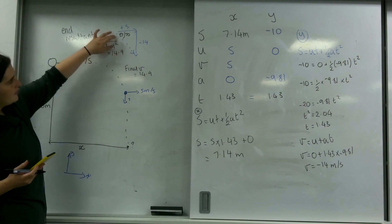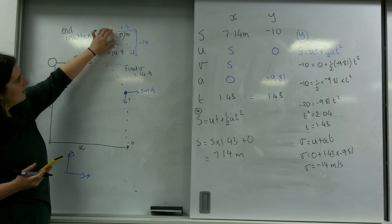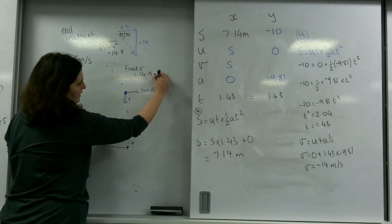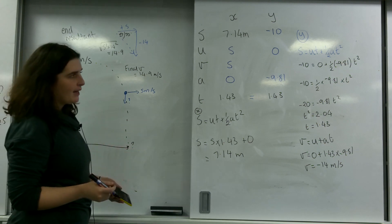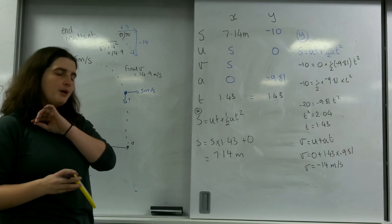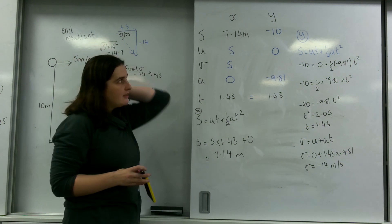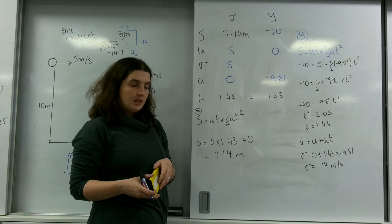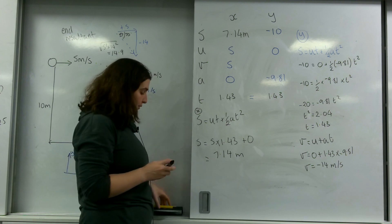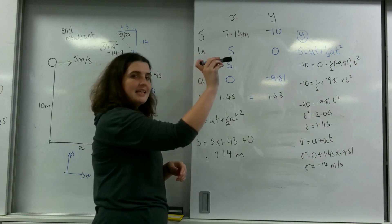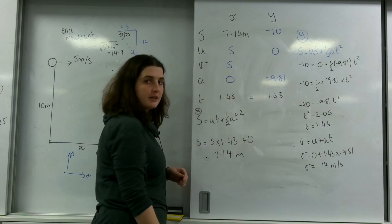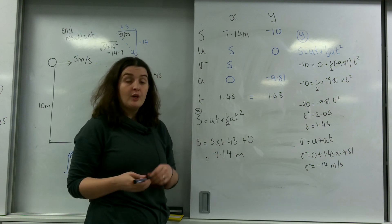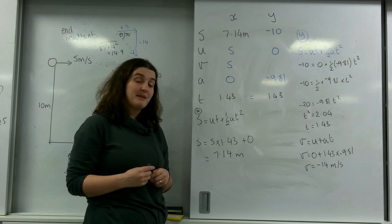So we can see the final resultant velocity is 14.9 metres per second at 70 degrees below the horizontal. There's so much information you can get from using SUVAT. But the most important part to take away is that the time in the X and Y direction are equal — no matter what type of projectile motion you have, the time moving in X is exactly the same as the time moving in Y. For definitive proof, click the link below to watch the Mythbusters video.